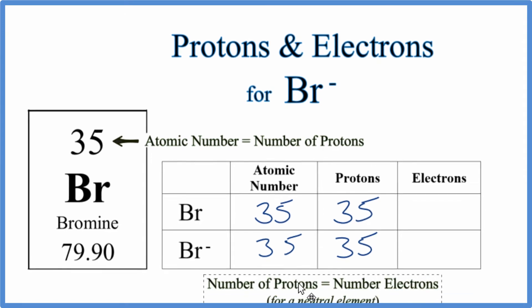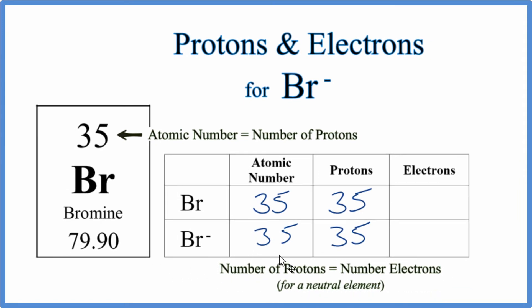For the neutral bromine element, the number of protons equals the number of electrons, so we have 35 electrons.